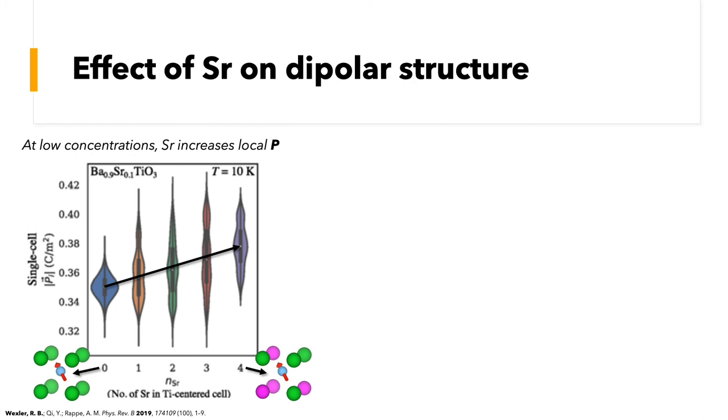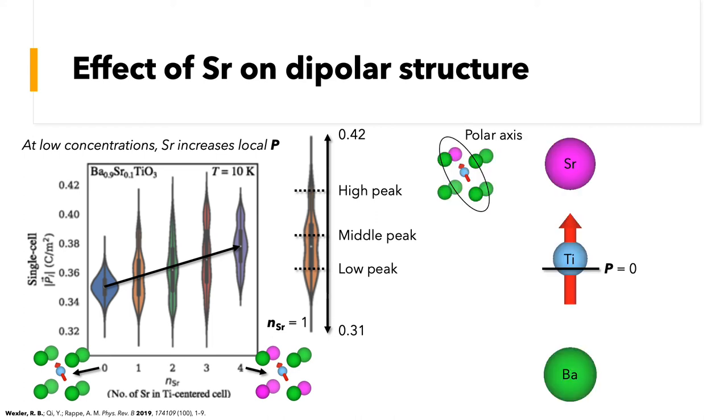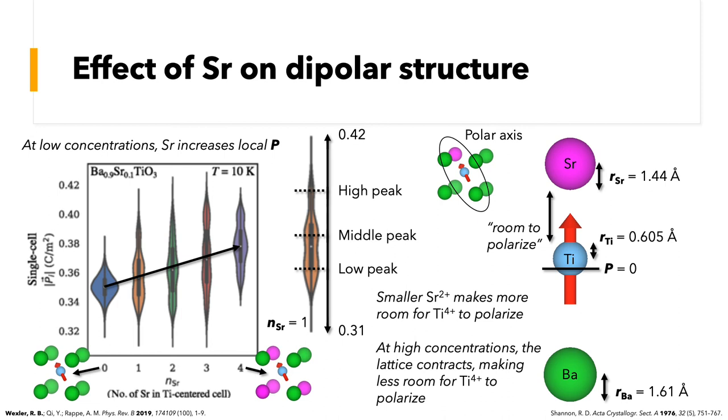As the number of strontium neighbors is increased, so does the single-cell polarization, which implies that strontium enhances the polarization of titanium, which is counterintuitive because, as we know, STO is paraelectric. Additionally, we find that the distributions for N-sub-Sr greater than or equal to one have more than one peak, so perhaps the configuration of strontium relative to the titanium polarization is also important. For this, we focus on the cases where there's only one strontium neighbor and see that there is a low, middle, and high peak. The high peak actually corresponds to cases where the titanium polarization vector points towards the A site containing strontium. And considering the fact that the ionic radius of strontium is smaller than that of barium, we hypothesize that low concentration strontium doping enhances the titanium polarization because its smaller ionic radius creates extra room for titanium to displace. This side peak is then lost at higher strontium concentrations, which I haven't shown here but you can find in the paper cited on the bottom left, because the lattice constants start to contract as the crystal becomes more like STO.